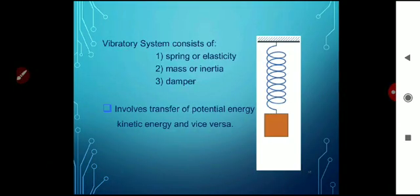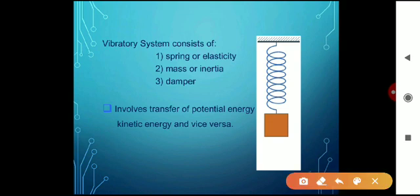In a vibratory system, there are three things. The first is spring and elasticity, the second is mass and inertia, and the third is a damper.